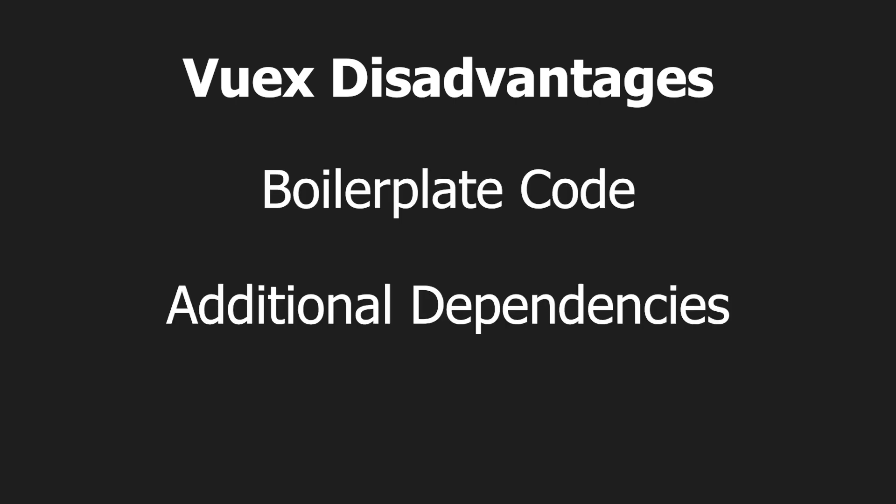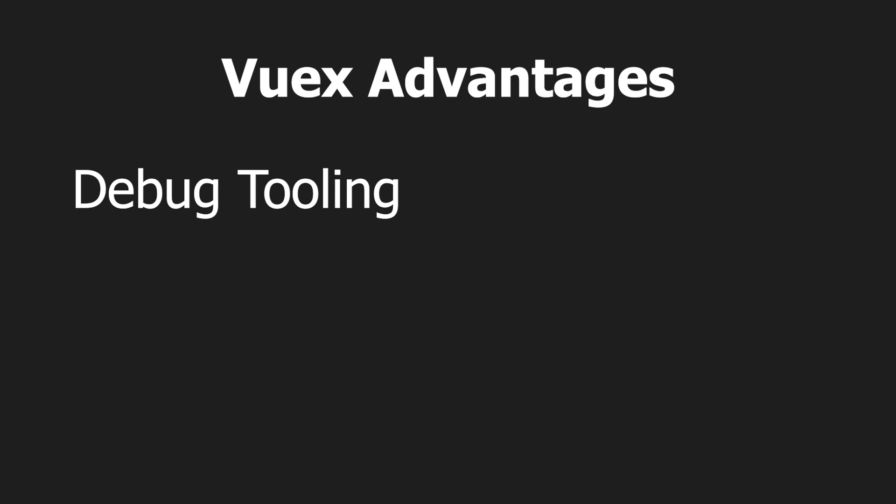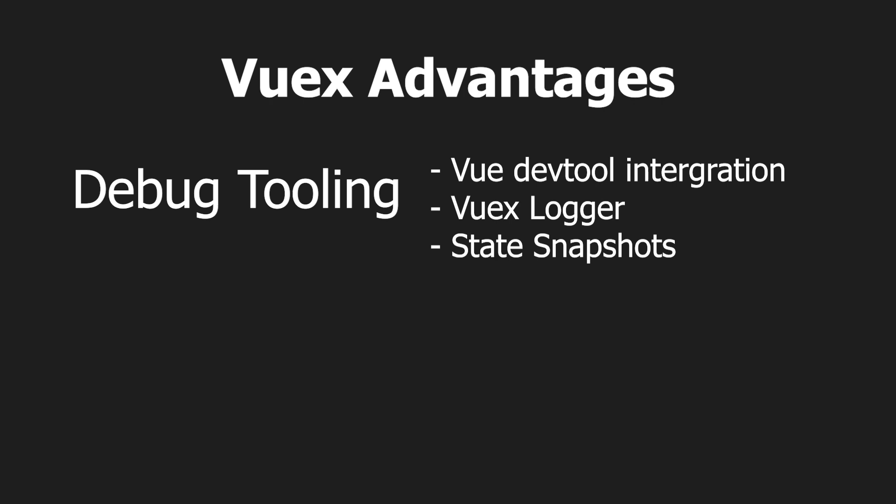Now that we have finished creating our store with the Composition API, we can answer the question: do we still need Vuex? Using the Composition API, we have overcome a lot of the complaints about Vuex. The first is we have reduced the amount of boilerplate code and the number of dependencies. But it's important to note we are missing out on a lot of the features offered by Vuex. Although we have copied the reactive state mechanism, we're still missing out on the nice debugging capabilities Vuex has to offer.